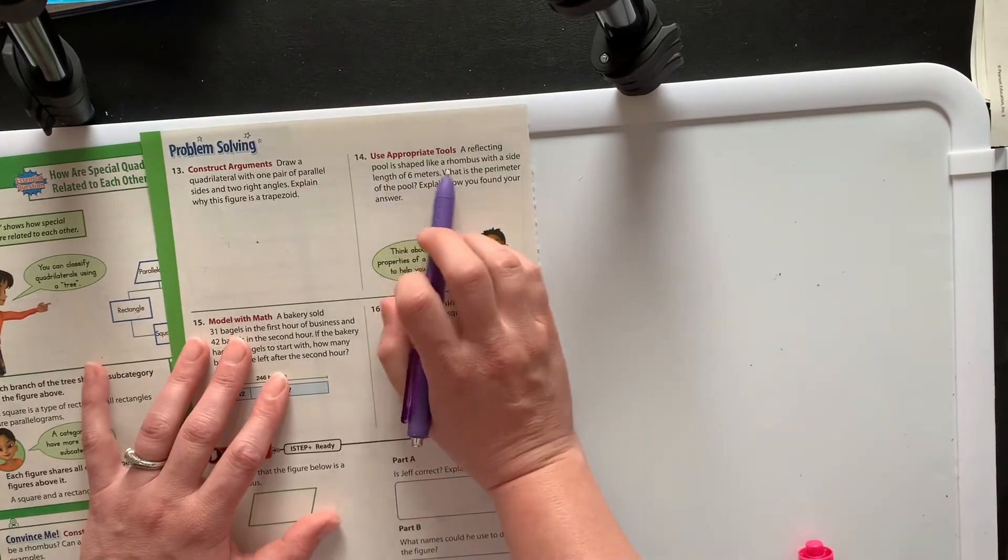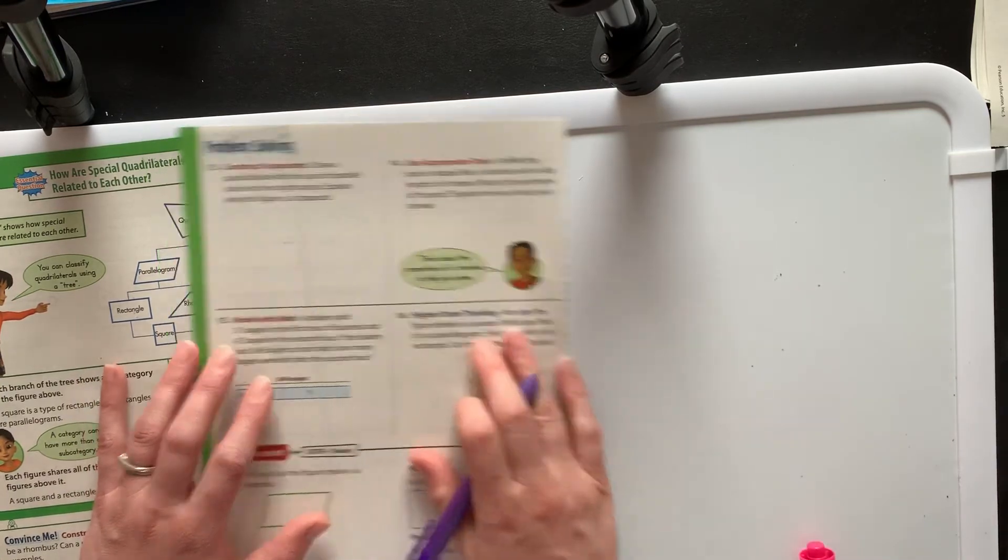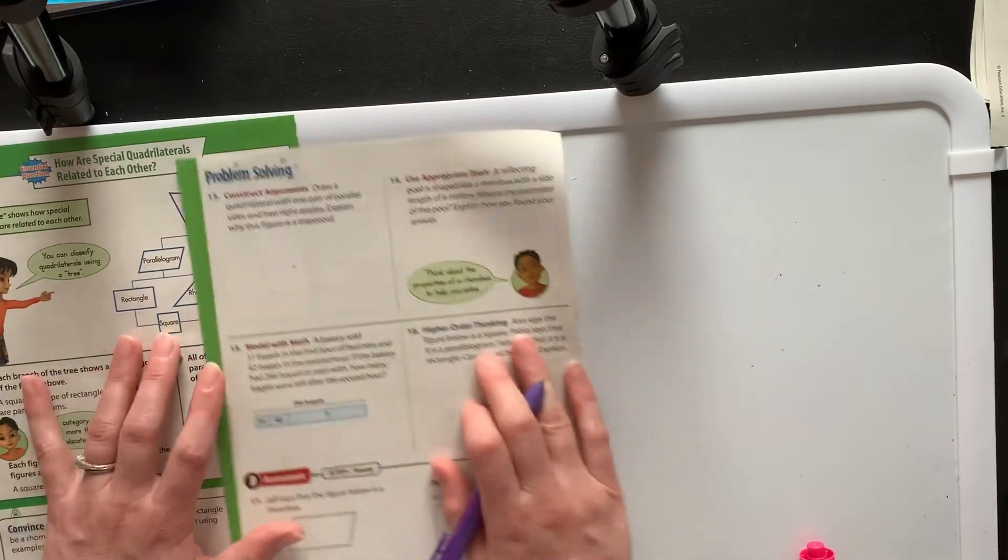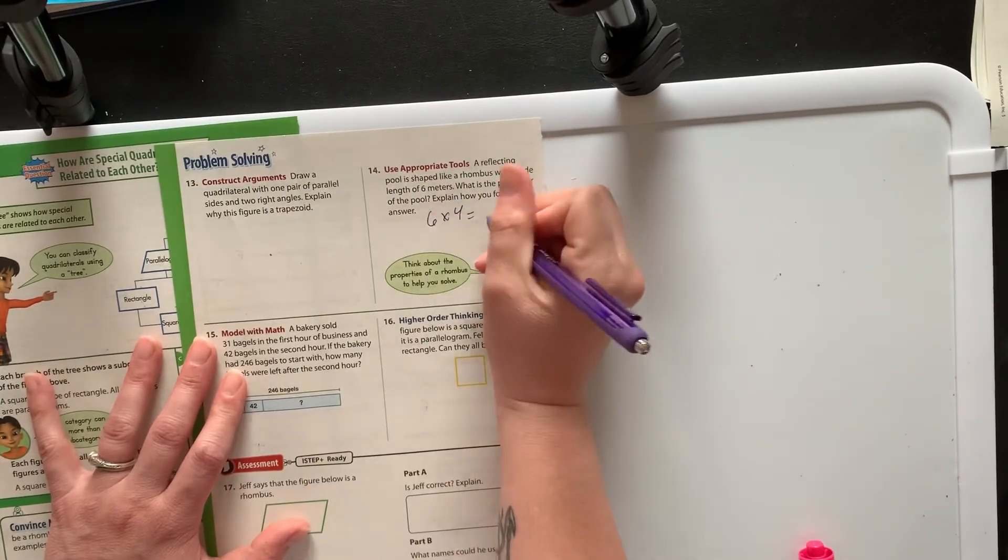A reflecting pool is shaped like a rhombus with a side length of six meters. What is the perimeter? Well, we know for a rhombus that all four sides are the same length. So we would just need to take six times four, and that's equal to 24.